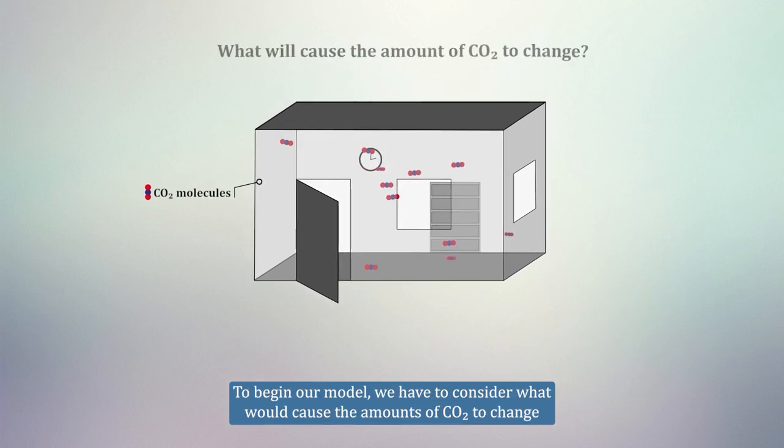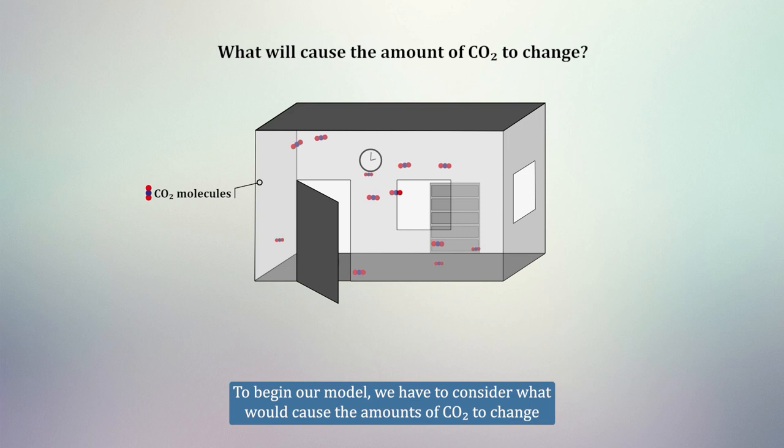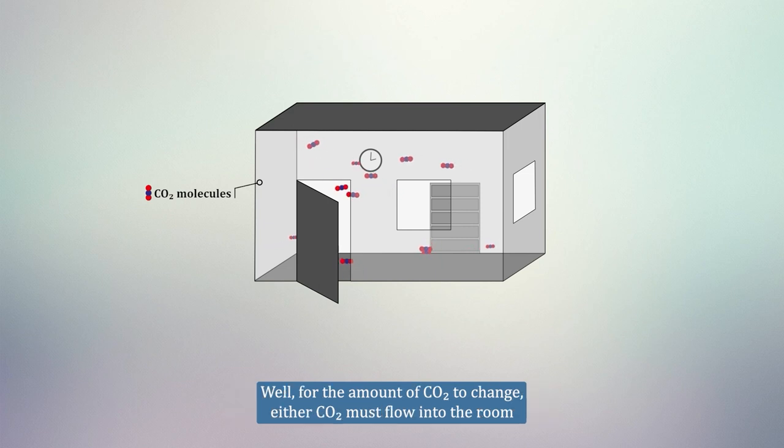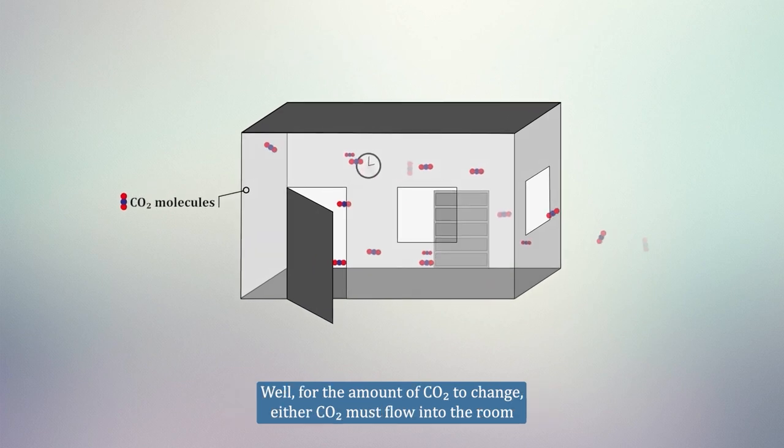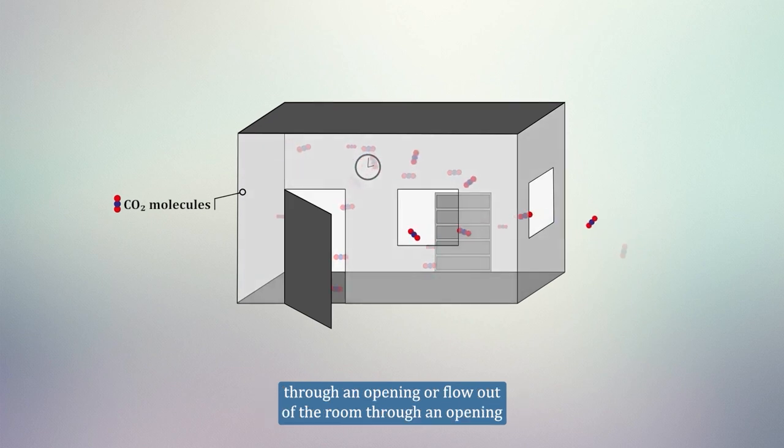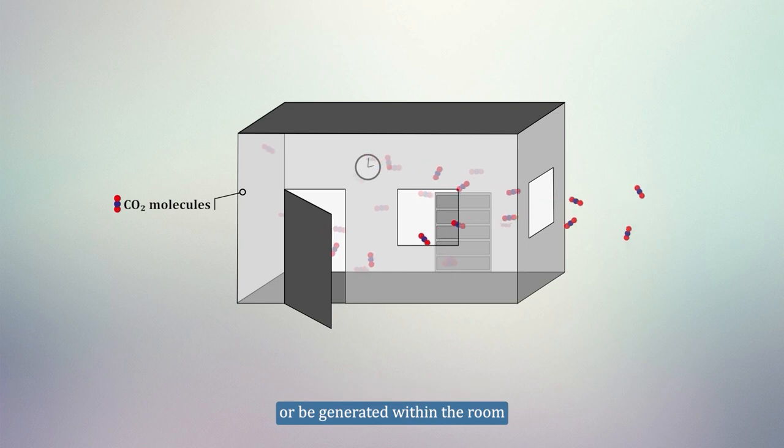To begin our model, we have to consider what would cause the amount of CO2 to change. Well, for the amount of CO2 to change, either CO2 must flow into the room through an opening, or flow out of the room through an opening, or be generated within the room.